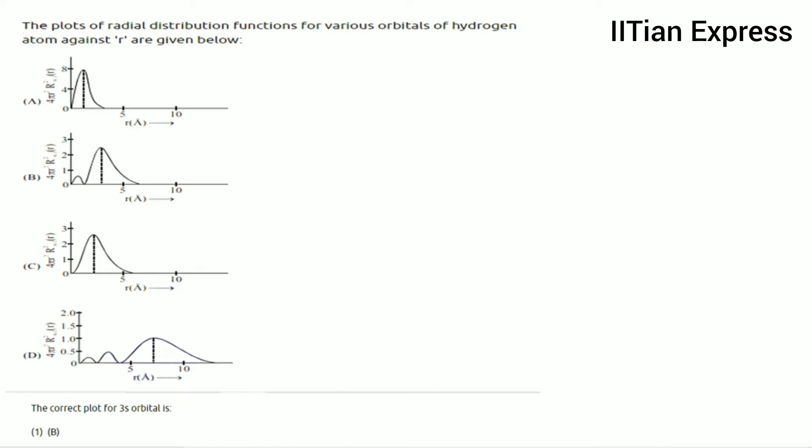The question reads: the plots of radial distribution functions for various orbitals of hydrogen atom against R are given below. Find the correct plot for 3s orbital.